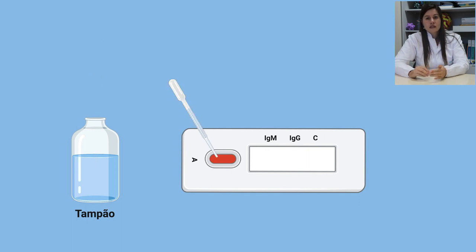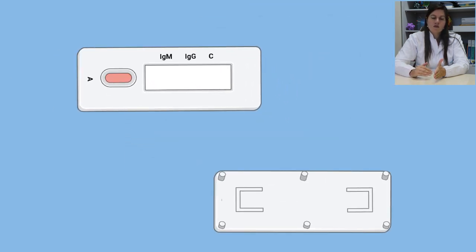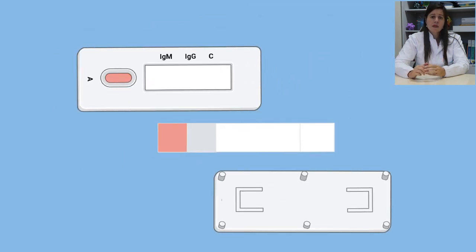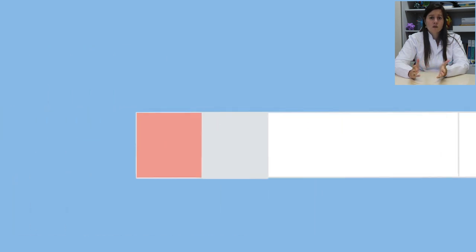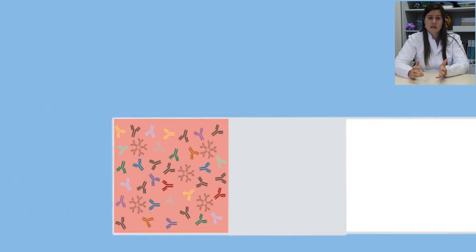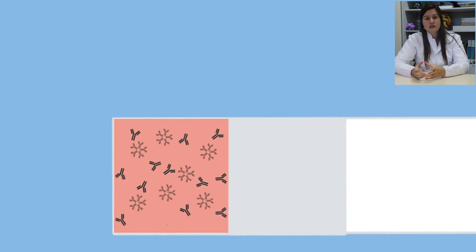E isso faz com que o sangue e, assim, os anticorpos se distribuam no filtro da área A e a amostra flua pela membrana. Apesar de termos diversos anticorpos do nosso sangue, para fins representativos, vamos deixar apenas os anticorpos, aqui representados em preto, que seriam os anti-SARS-CoV-2.